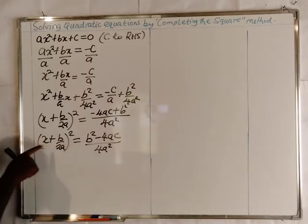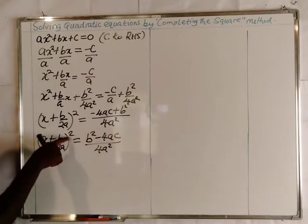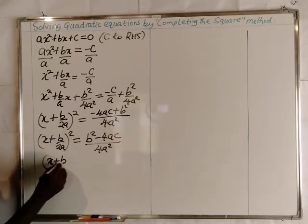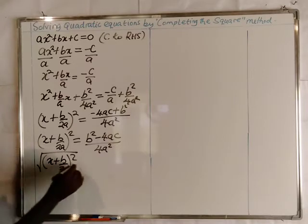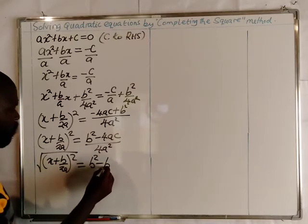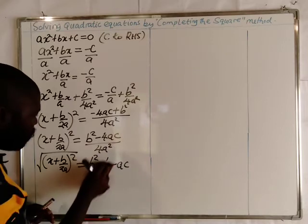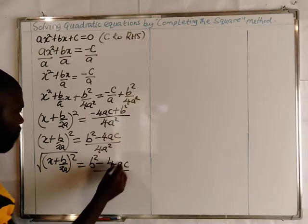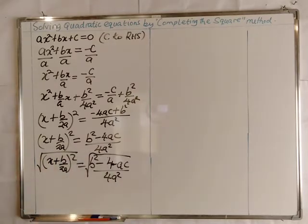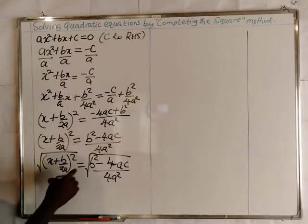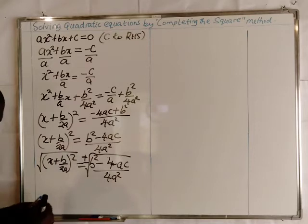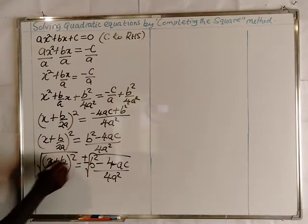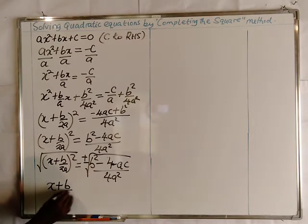At this point we make x the subject of the formula. To get rid of the power of 2, we introduce the square root on both sides. Since this is an equation, whatever we do on the left hand side we also do on the right hand side. The square root cancels the power of 2, leaving x plus b over 2a.